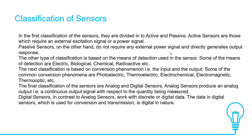Classification of sensors. In the first classification, sensors are divided into active and passive. Active sensors are those which require an external excitation signal or power signal. Whereas passive sensors, on the other hand, do not require any external power signal and directly generate an output response.